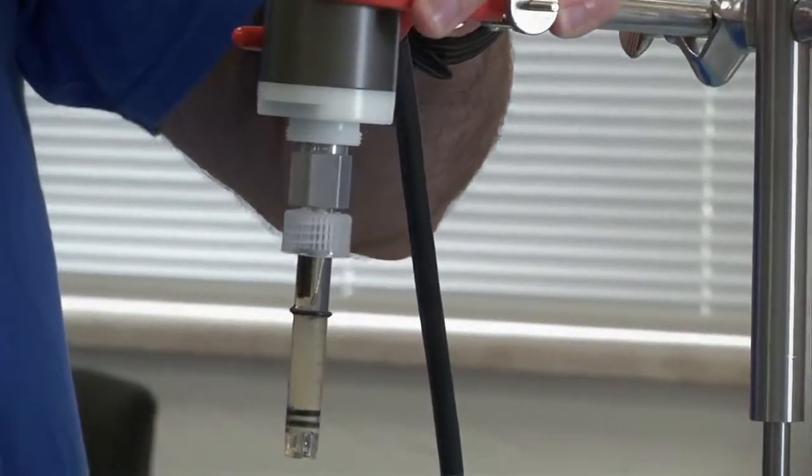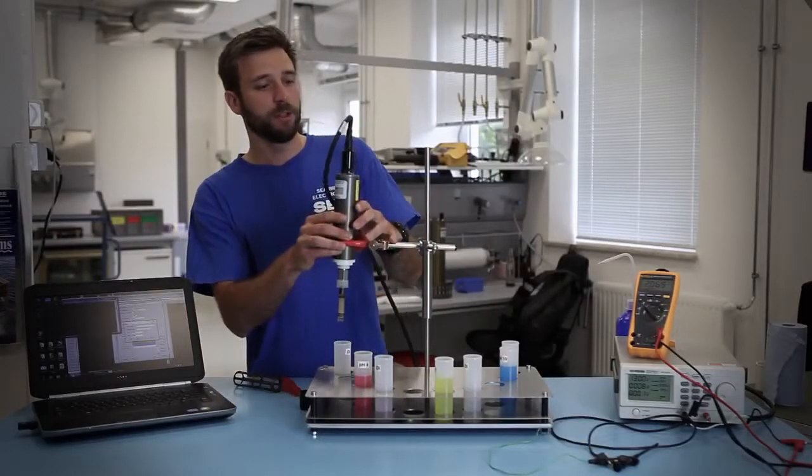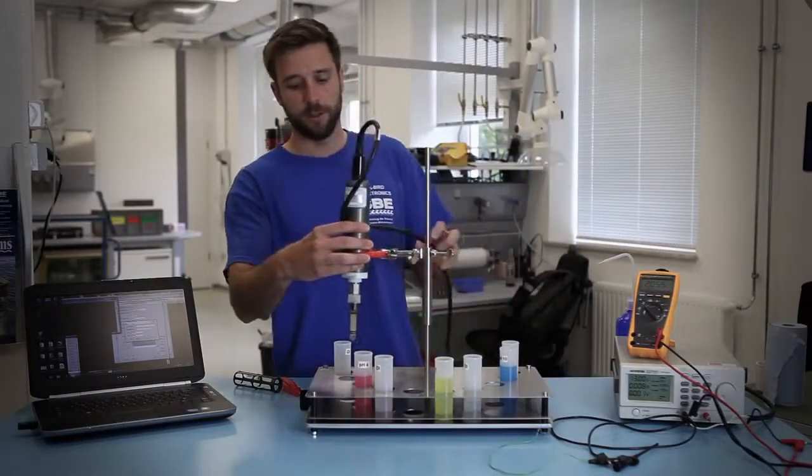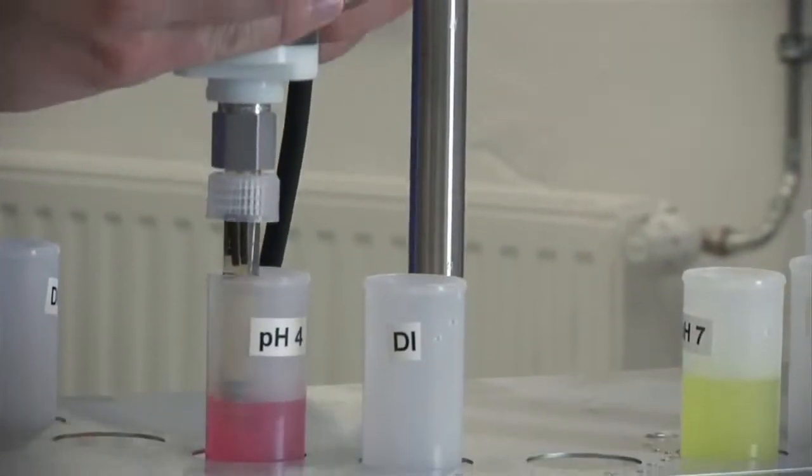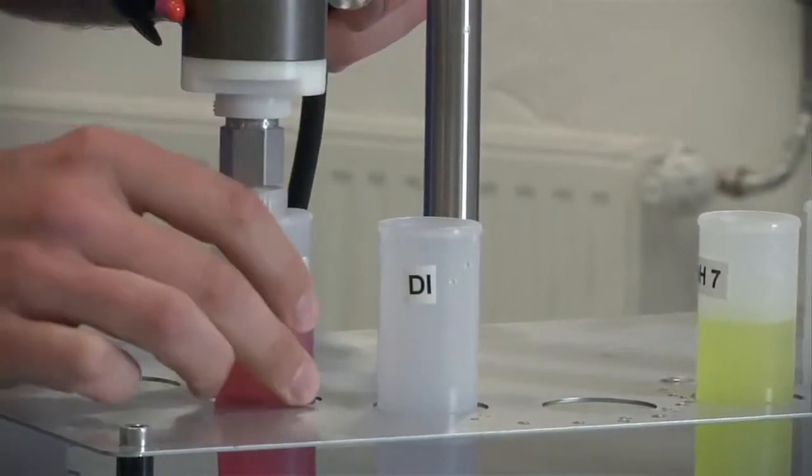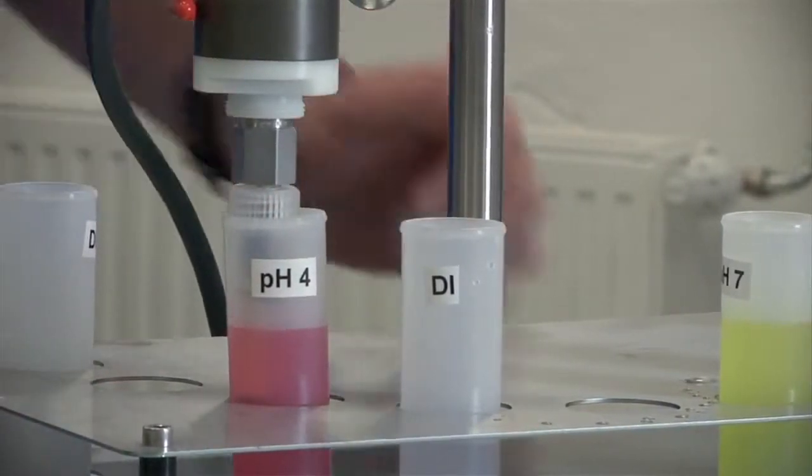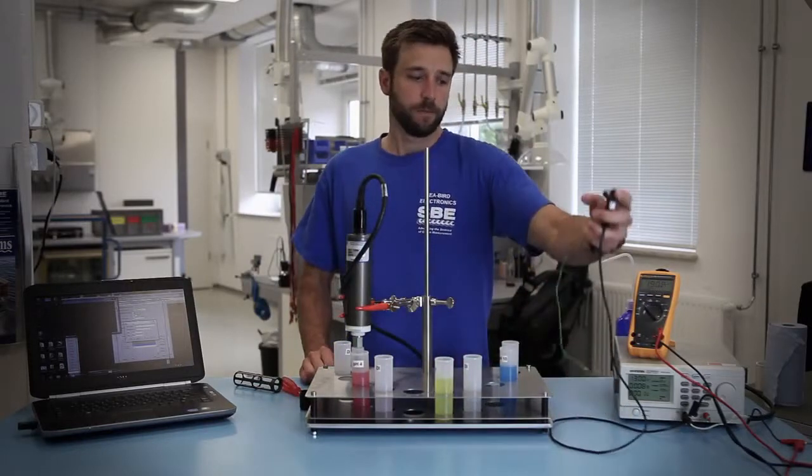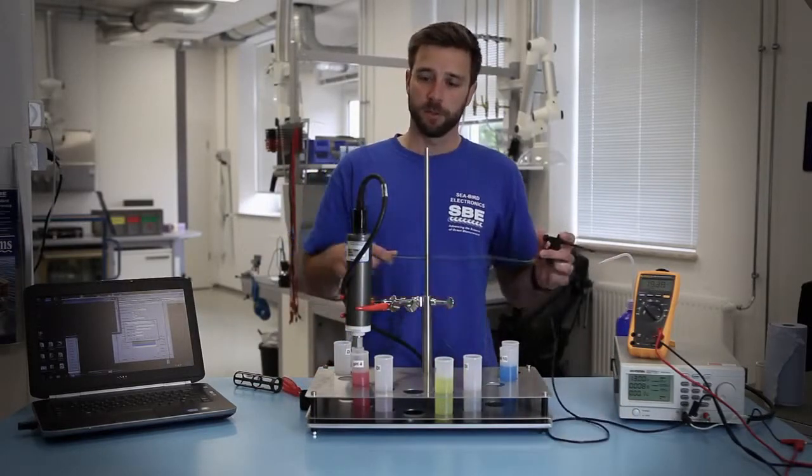So when we first do this, we want to supply power to the pH sensor. The power supply is on and we'll place it in our first solution, pH buffer solution 4. Once it's in there you want to make sure that you have the instrument grounded into the solution.